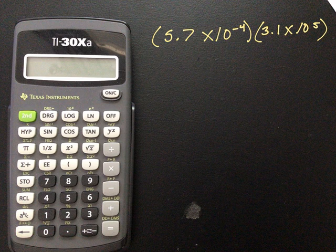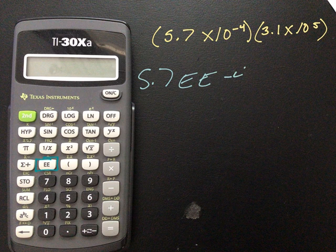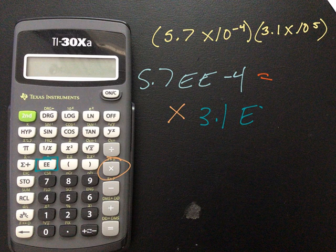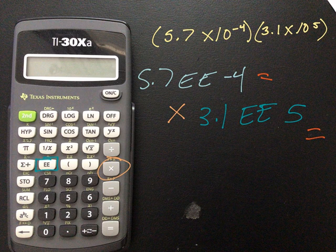Okay, so with this one, you can see clearly the EE button. We don't have to hit second on this one. We simply hit EE. So for this, you are going to hit 5.7 EE negative 4. And when you do that, I then hit equals and it changed that into standard form. Then I hit the times button. And then I go back to my second number, 3.1 EE 5. And again, I hit equals.